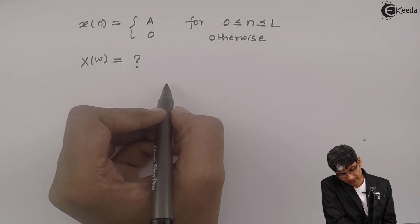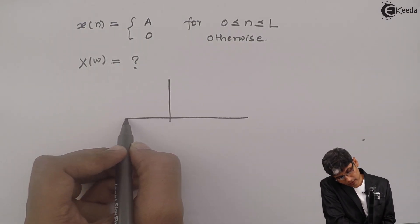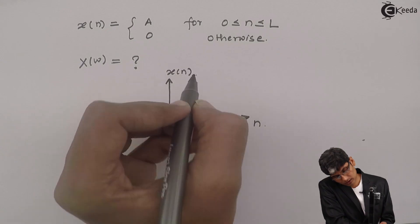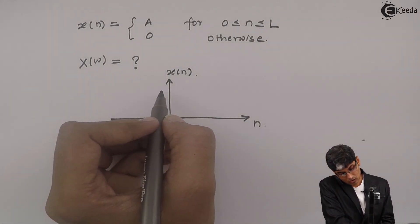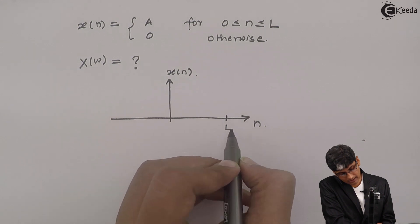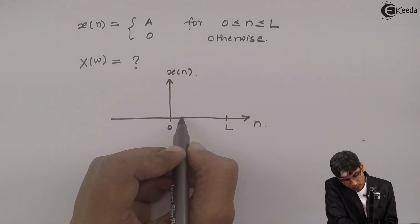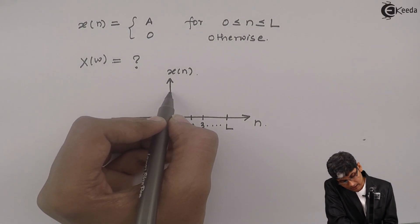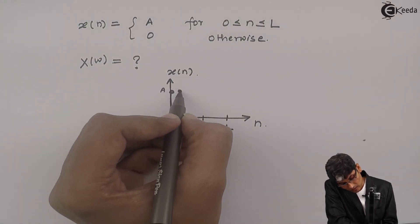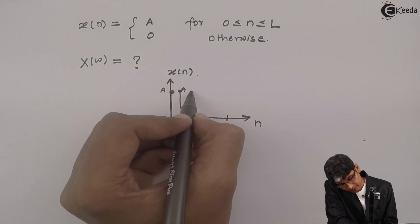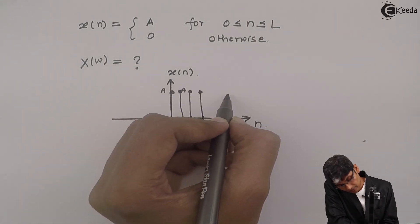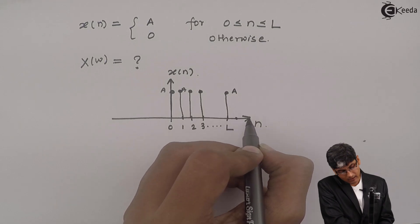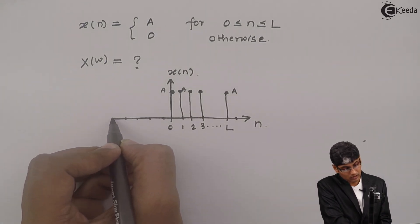Let us first draw and see how the signal looks like. If I draw the signal x(n) with n as the x-axis and x(n) as my function y-axis, then it will go from, let us say, this is my length L. For 0, 1, 2, 3 and so on till L, I will get the amplitude as A. There will be amplitude A everywhere, till L I will have an amplitude of A, and after that there are all zeros and before this also there are all zeros.